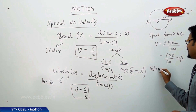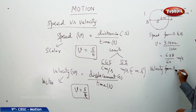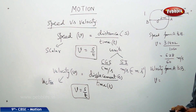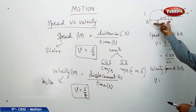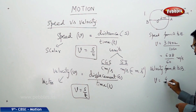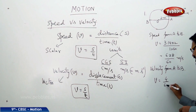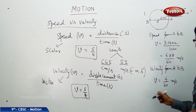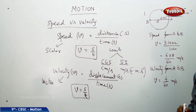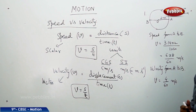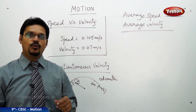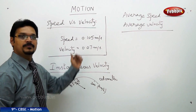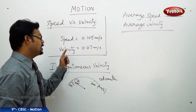Now for velocity from A to B: velocity = displacement / time. The displacement (shortest distance from A to B) is 2 + 2 = 4 meters. Time is 1 minute = 60 seconds. So velocity = 4/60 meters per second. The answers are: speed = 0.105 meters per second and velocity = 0.07 meters per second.